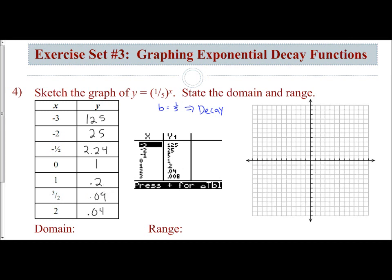Now I'm just going to plot the points. At negative 3, I am way up beyond anything even close, 125. At negative 2, I am all the way up here to 25. So I can't graph those. At negative 1 half, I am at 2.24. At 0, I'm at 1. At 1, I'm at 0.2. Then 0.09, and then 0.04.